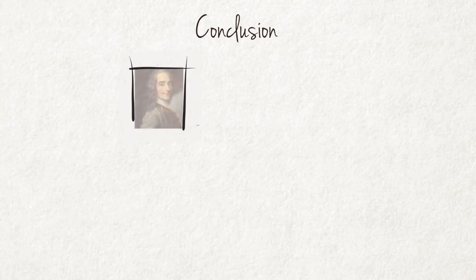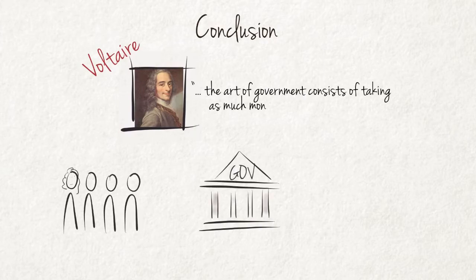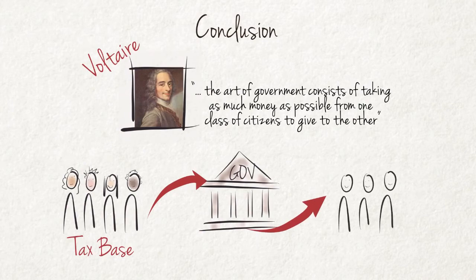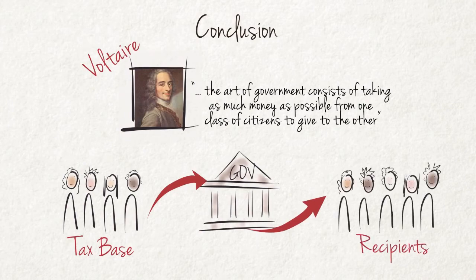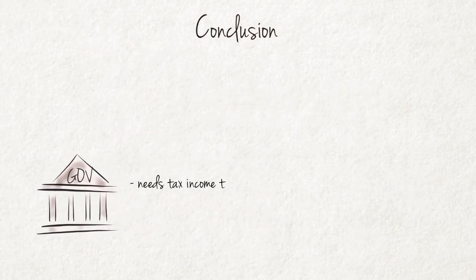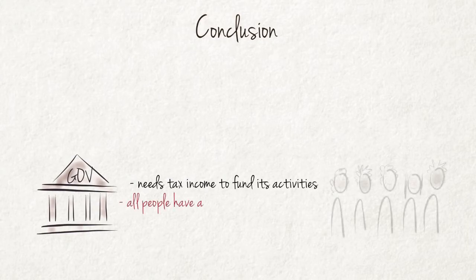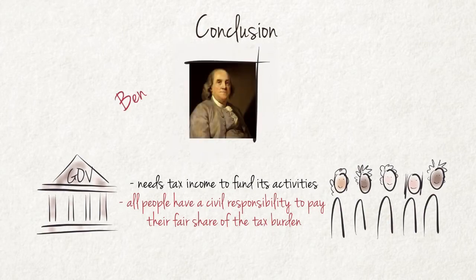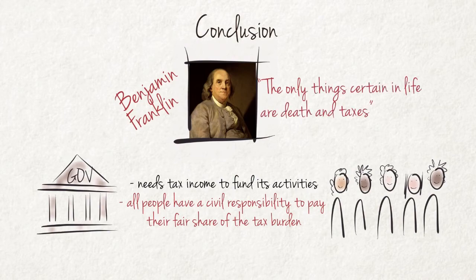The famous French writer and philosopher Voltaire said that the art of government consists of taking as much money as possible from one class of citizens to give to the other — a statement that really underscores the role of taxes and redistribution by the government. Government needs tax income to fund its activities, and all people have a civil responsibility to pay their fair share of the tax burden. If everybody pays their fair share, the tax burden on everybody will be smaller. To paraphrase Benjamin Franklin, the only things certain in life are death and taxes.